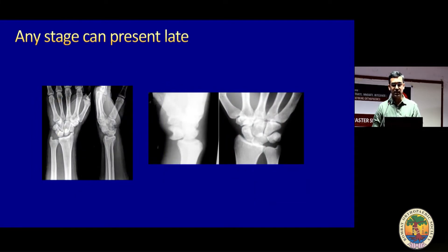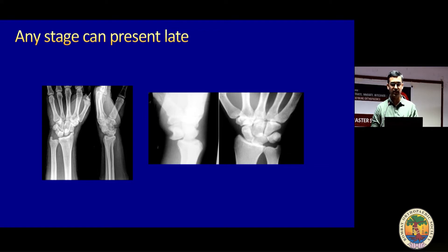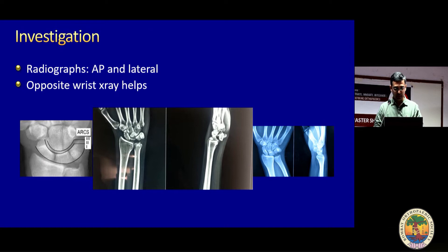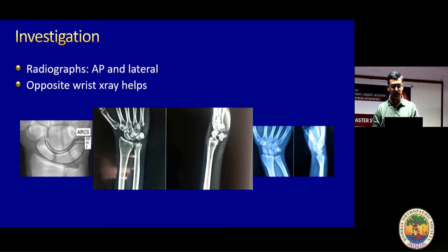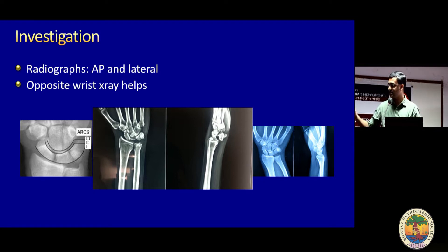Any stage of perilunate — whether it be a lunate dislocation, transcaphoid, greater arc, or lesser arc — can be missed. Please assess X-rays carefully. Whenever you see an X-ray like the one in the center and you're not able to find out what's wrong, go back to the left-hand side X-ray, keep it with you on your phone, compare, and assess Gilula's arc.